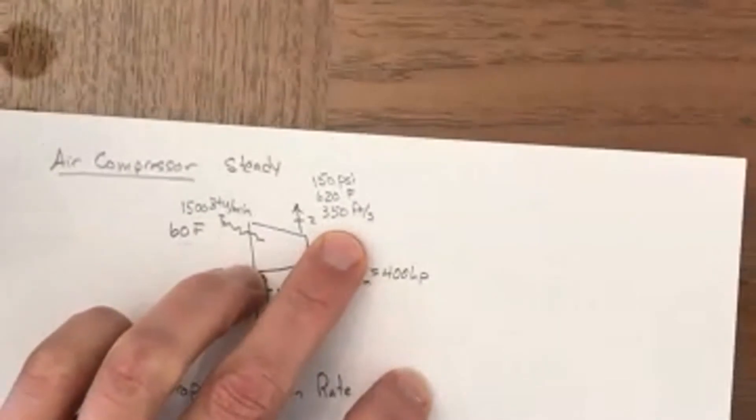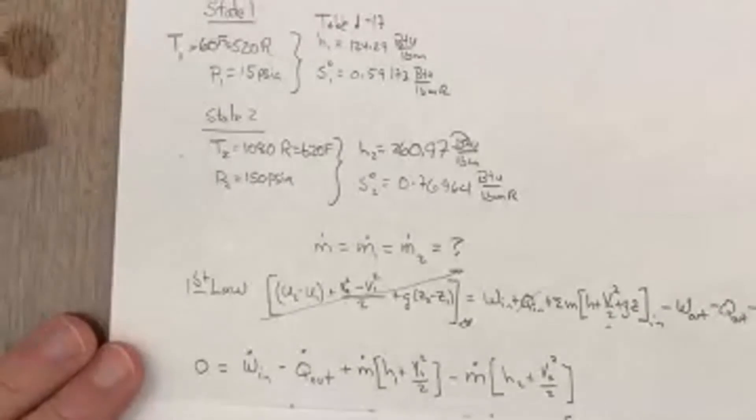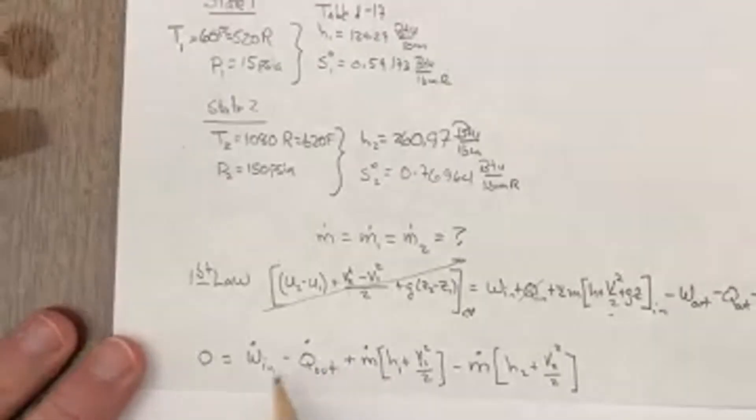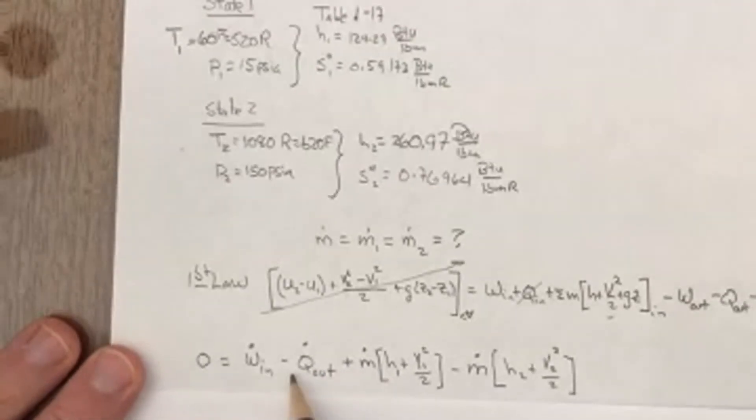I've got some work in and some Q. I've got no Q in here, and I've got some mass going in. I think I'm going to keep that kinetic energy term just for a little bit to see what happens, because this 350 feet per second, that's crazy fast coming out of there.